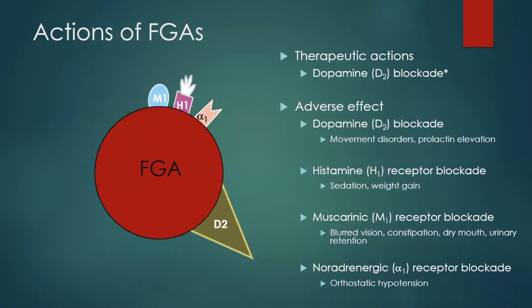The primary actions of first generation antipsychotics are antagonism of the dopamine D2 receptor — blocking that receptor, the brownish triangle shown here. Other main mechanisms include antagonism of muscarinic receptors, histaminic receptors, and noradrenergic alpha-1 receptors. Dopamine D2 blockade is what we want to reduce psychotic symptoms, but there are several dopaminergic pathways and we can't block just one — so part is therapeutic and part contributes to adverse effects.